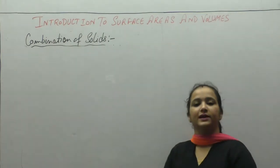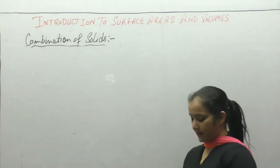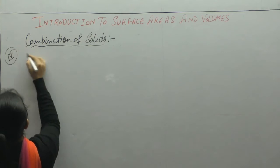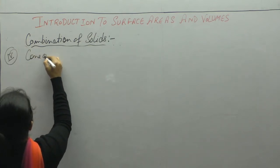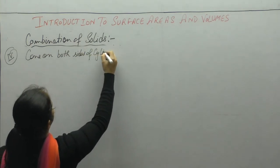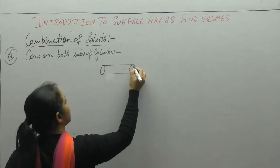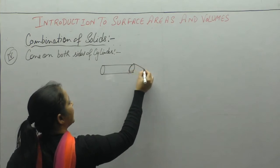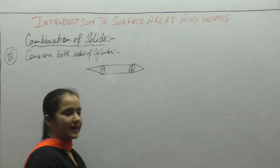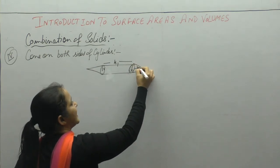Hello students. Introduction to surface area and volume — combination of solids. Next combination: cone on both sides of cylinder. So this is a cylinder, and if a cone is attached on both sides of it, the radius of the cylinder and cone will be the same, r. Height of the cylinder is h1 and height of the cone is h2.